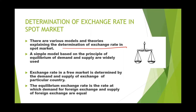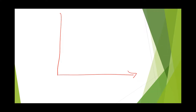There are various models and theories to explain the determination of exchange rate in the spot market, but a very simple model is based on the principle of equilibrium of demand and supply of foreign currency. According to this principle, the exchange rate in a free market is determined by the demand and supply of a foreign currency. The equilibrium rate is the one where the demand and supply of foreign currency are equal.